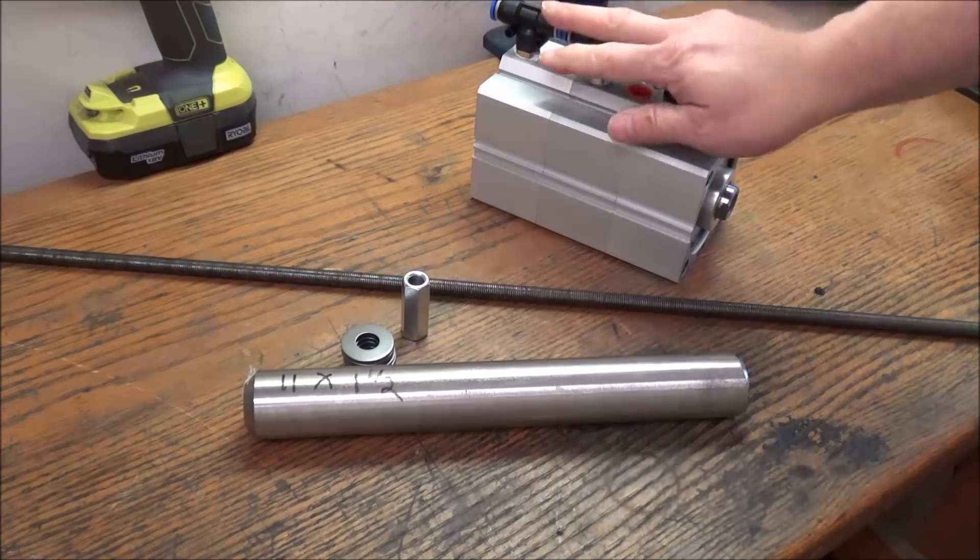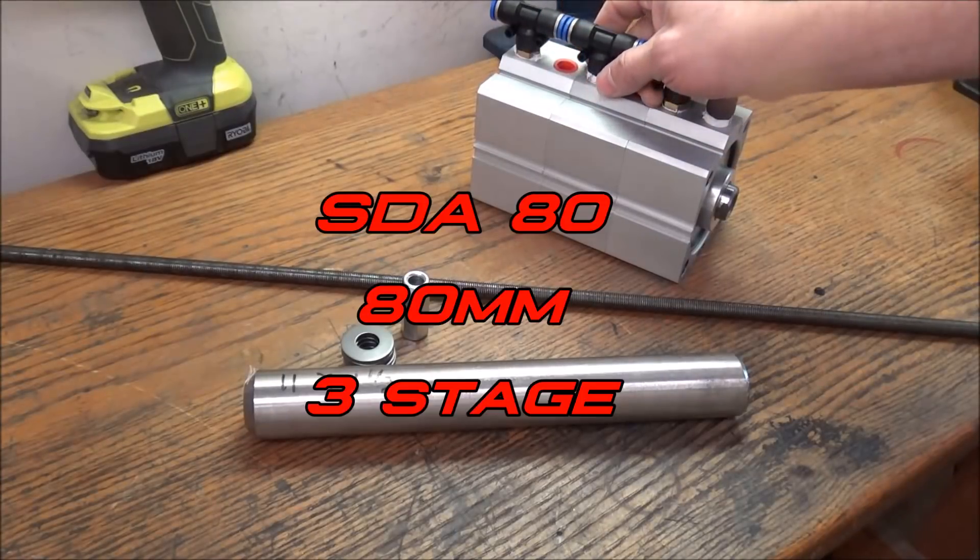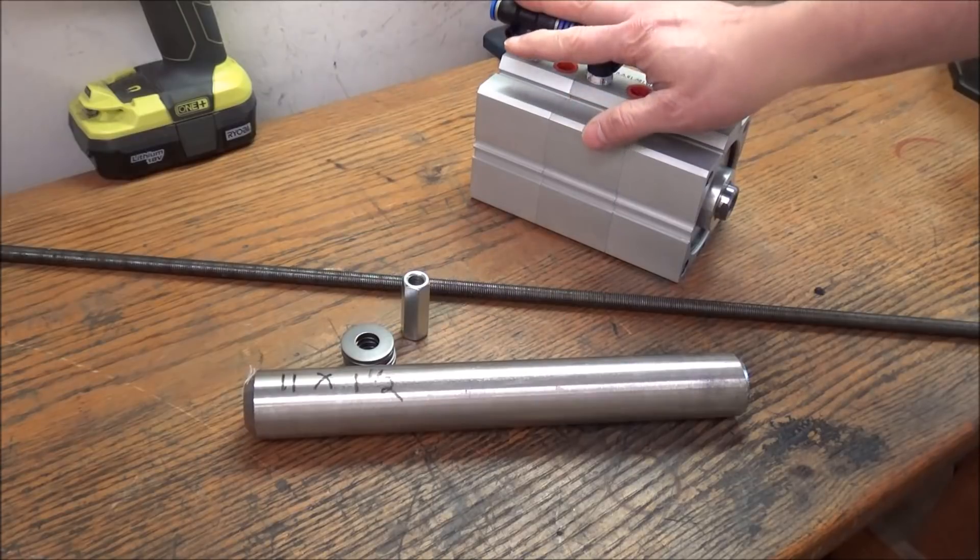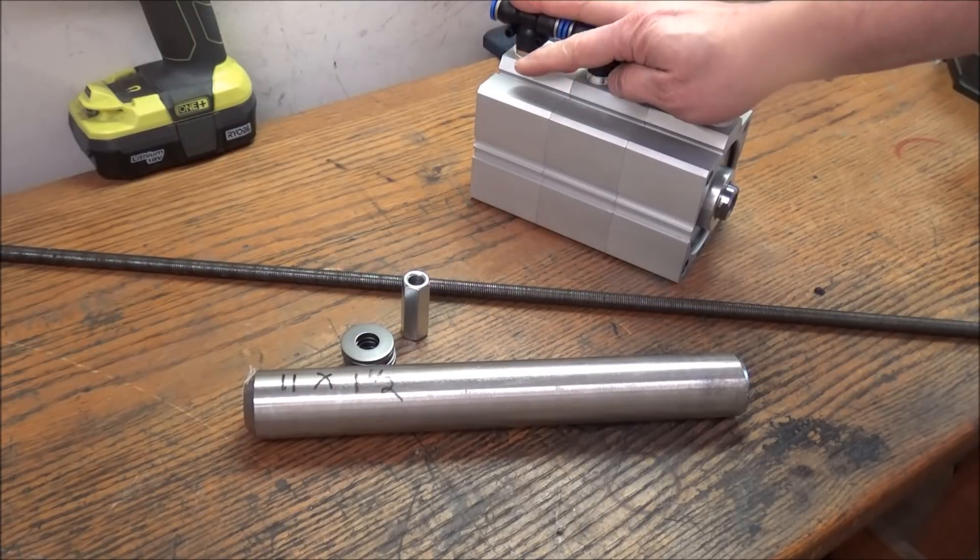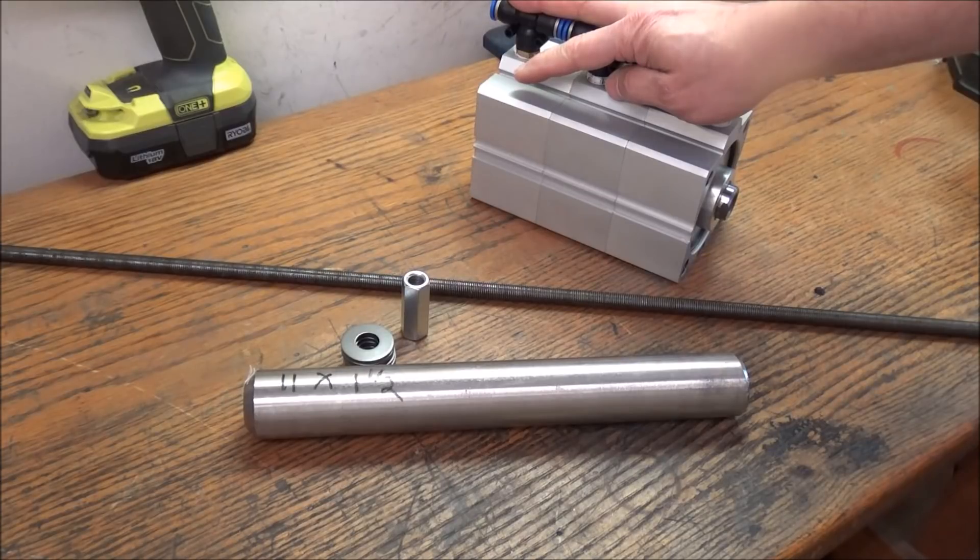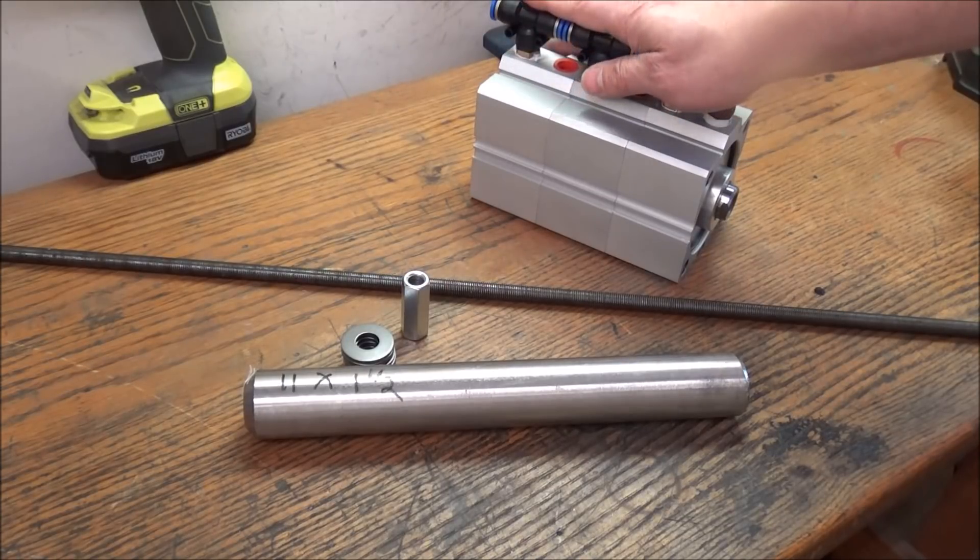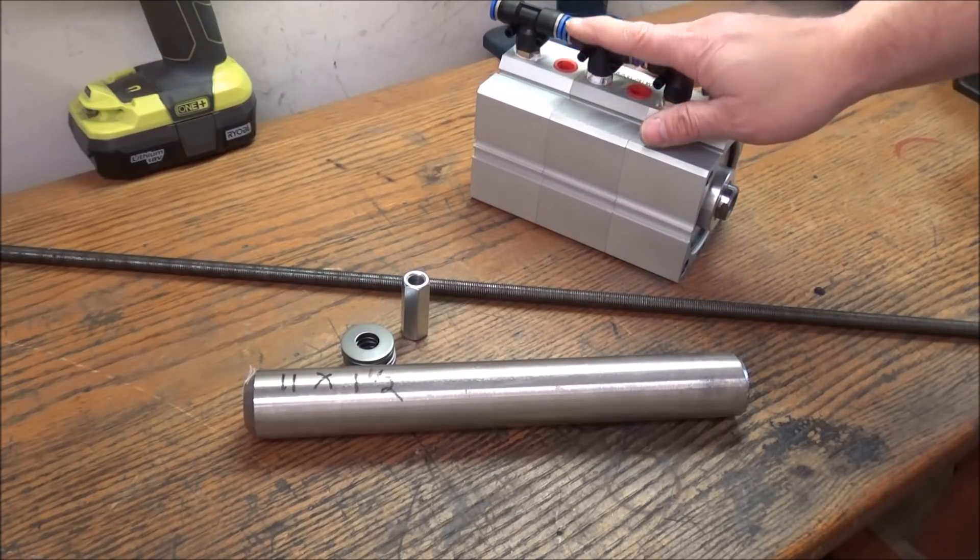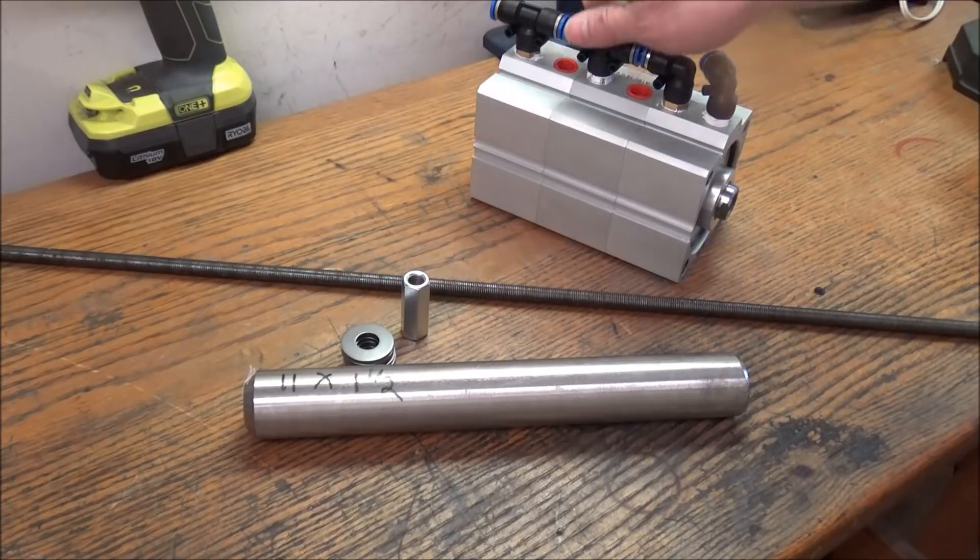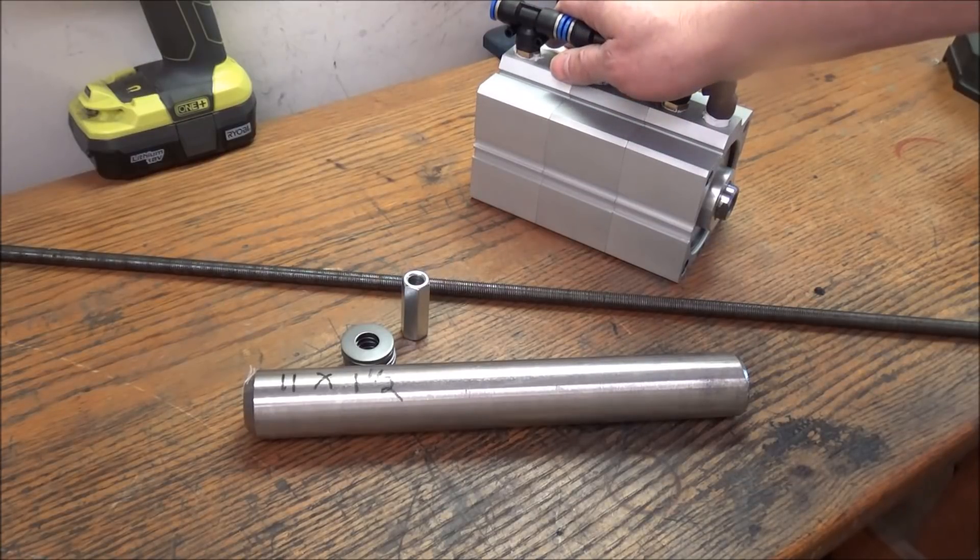So I've got my air cylinder. This is an 80 millimeter bore air cylinder. I originally had planned to go with a 100 millimeter bore. However, because of the limited space on top of the head, the 80 millimeter works out a little bit better.